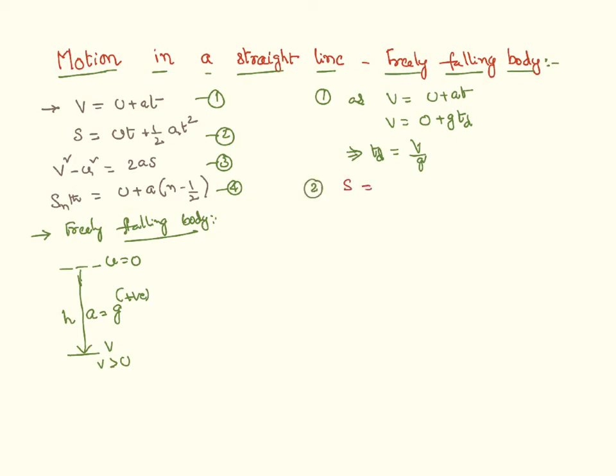I can rewrite my second equation of motion: s = ut + ½at². Let the distance covered be h. Initial velocity is zero because it's a freely falling body, so h = ½gt². I got an equation h = ½gt².